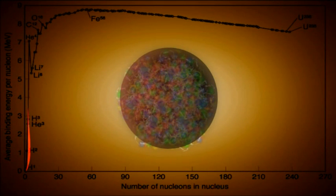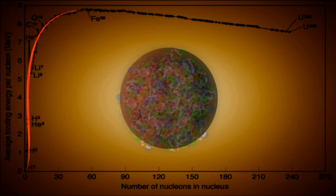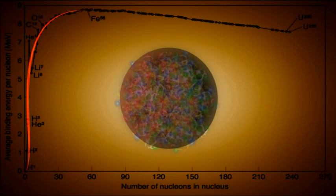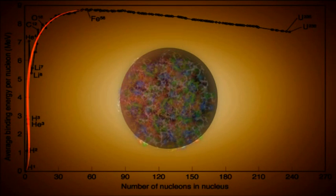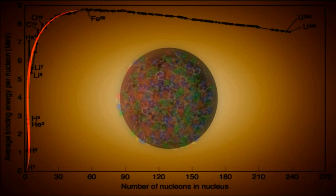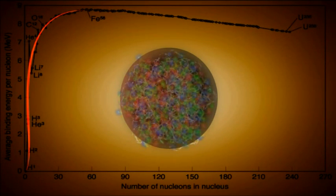This increase in binding energy continues until we get to iron and nickel, where the nucleus has about 60 nucleons in it. At this point, the nucleus has a radius more than two and a half nucleons wide, which is the range at which the repulsive electromagnetic force begins to dominate.